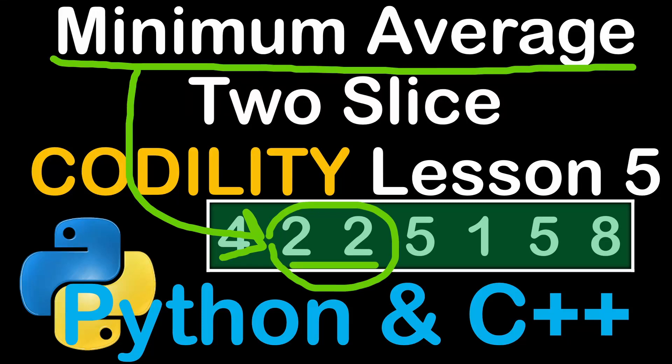Hello everyone, welcome again to one more video on the Codality lessons. This time we're going to solve another problem of lesson 5, and it's entitled Minimum Average 2 Slice.